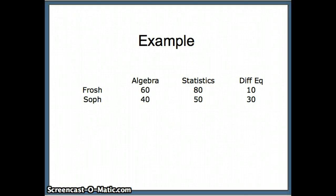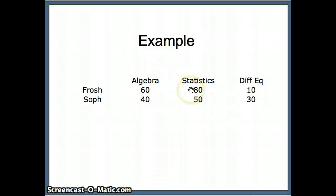Now we're going to look at a set of data. We have freshmen and sophomore students and the math classes they're taking: some are taking algebra, some statistics, some differential equations. For example, 60 means there are 60 freshmen taking algebra, and 80 means there are 80 freshmen taking statistics. Assume nobody is taking more than one math class — that's an important assumption.